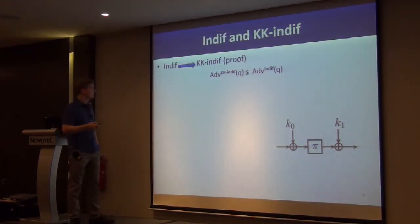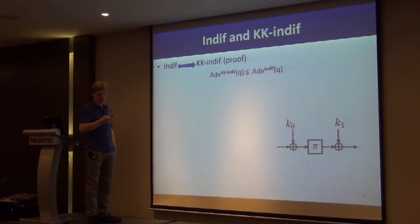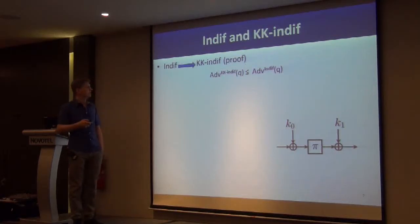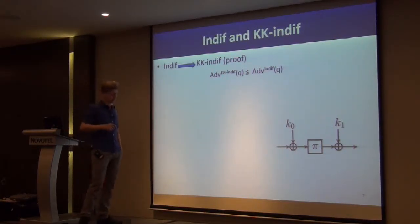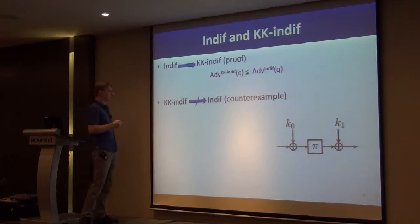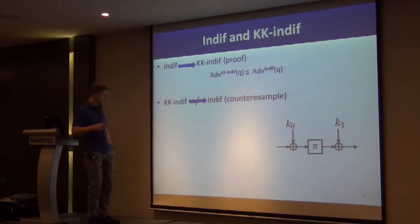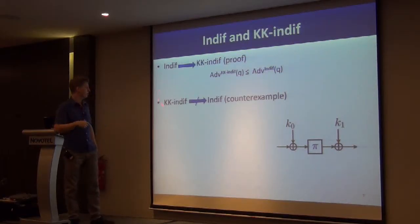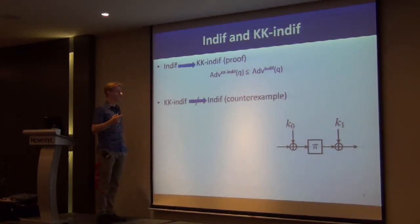Let us look at how some notions are connected. General indifferentiability, as it turns out, actually implies known-key indifferentiability. In other words, the advantage an adversary might have in known-key indifferentiability is no more than the advantage in general indifferentiability. But the other direction doesn't hold — we do have a counter-example. There are constructions that are not chosen-key indifferentiability secure, but those constructions are known-key secure, because known-key security is a weaker notion.